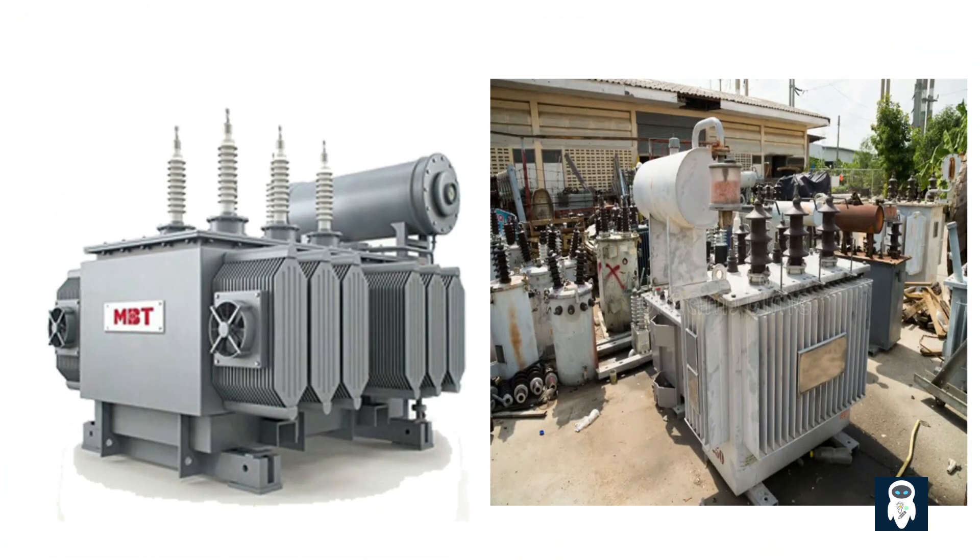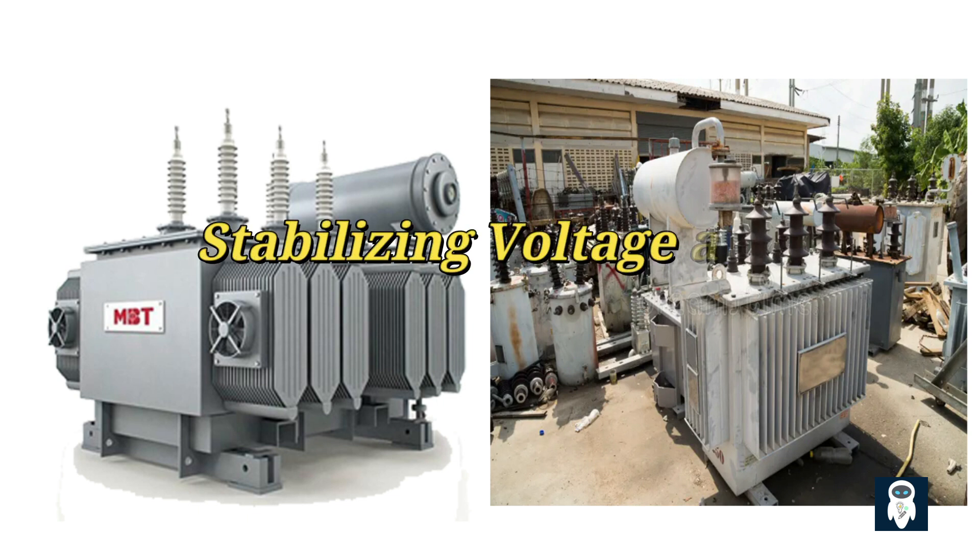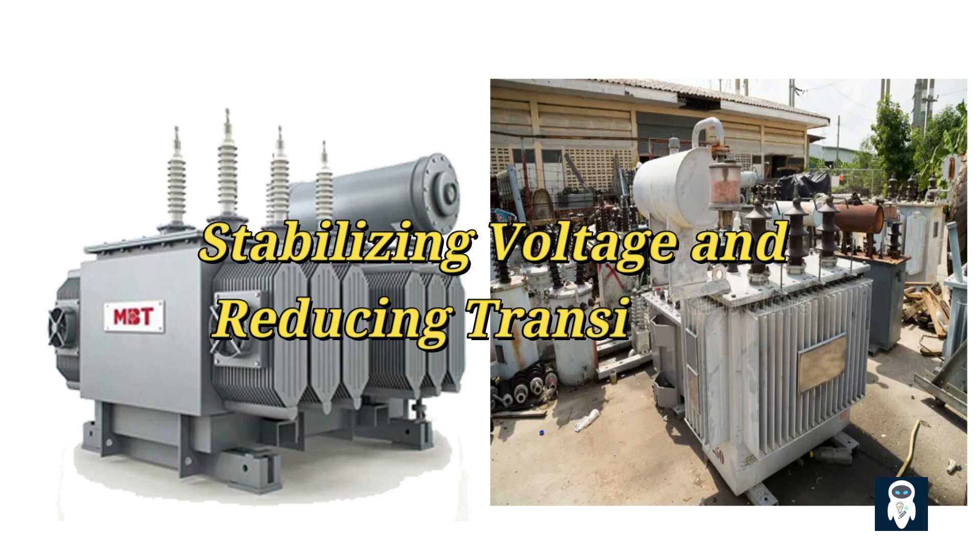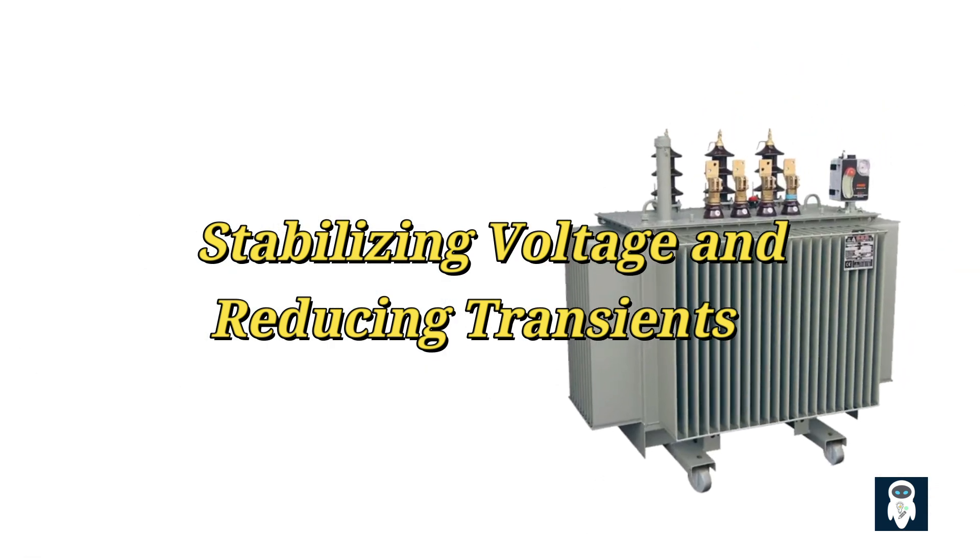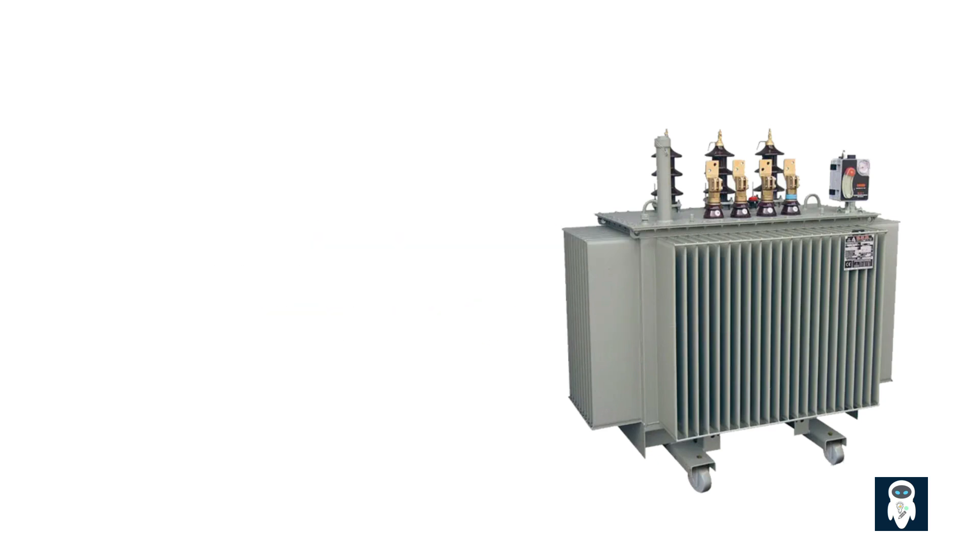The second reason for using a neutral grounding resistor is to stabilize voltage and reduce transients. Transformers are designed to operate at specific voltage levels, and any deviation from these levels can affect the performance of connected equipment. Additionally, switching events or sudden load changes can cause voltage transients, which may damage sensitive devices. By connecting a neutral grounding resistor, we create a path for fault currents to flow to the ground. This grounding path helps stabilize the voltages across the transformer windings during fault conditions and reduces the magnitude of voltage transients. This ensures that the output voltage remains within acceptable limits, minimizing disruptions to the power supply and protecting connected equipment.